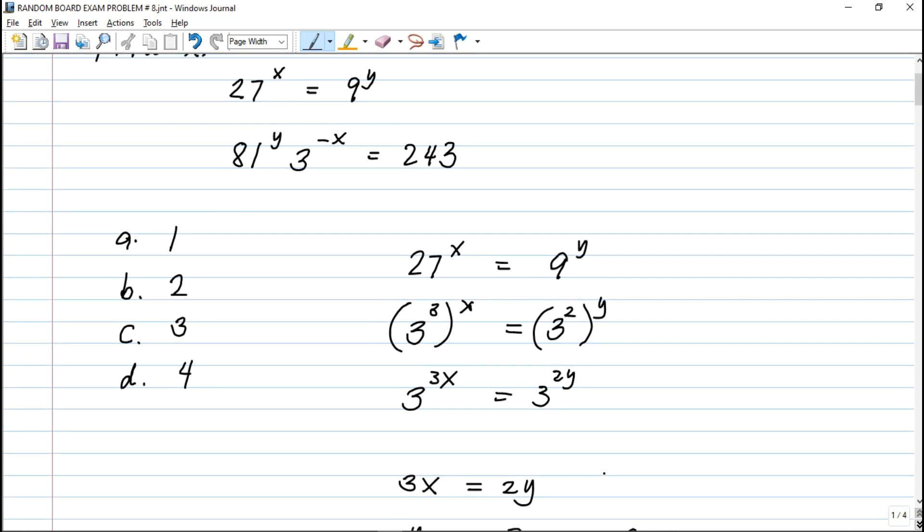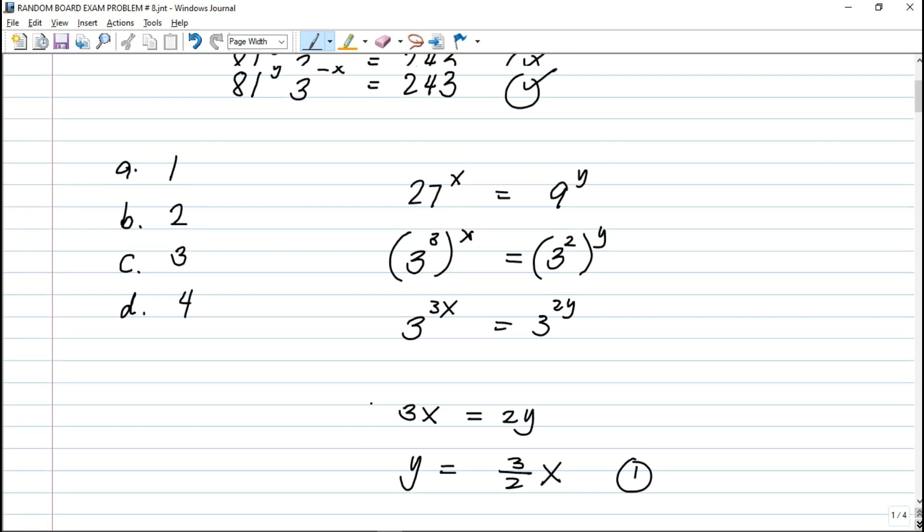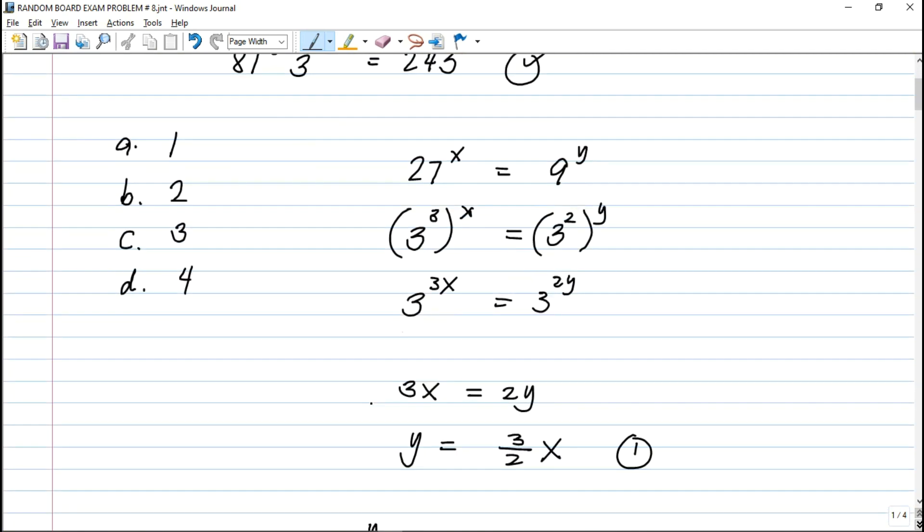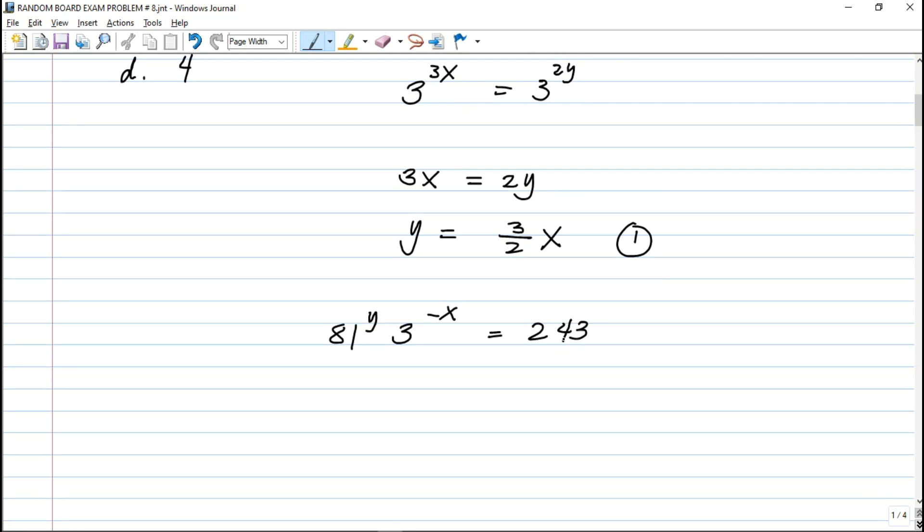Let's go to the second equation. I-revise din natin sya in order for us to get the equation out of those exponents. 81 raised to y times 3 raised to negative x is equal to 243. The rule guys, if you are multiplying the same base, you just add the exponent. Hindi same base nya, so we'll make the bases the same.